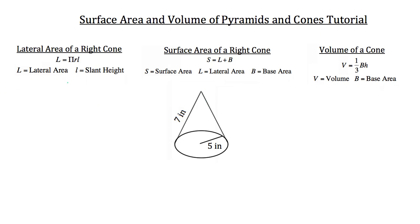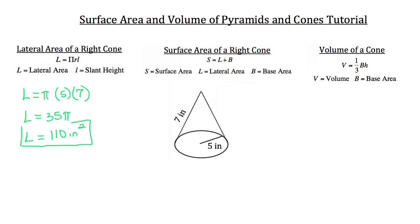Let's find the lateral area of this cone. The lateral area equals pi times the radius, which is 5, times the slant height, which is 7. So the lateral area is 35π, which multiplied out gives roughly 110 square inches — square inches because we're dealing with area in two dimensions.